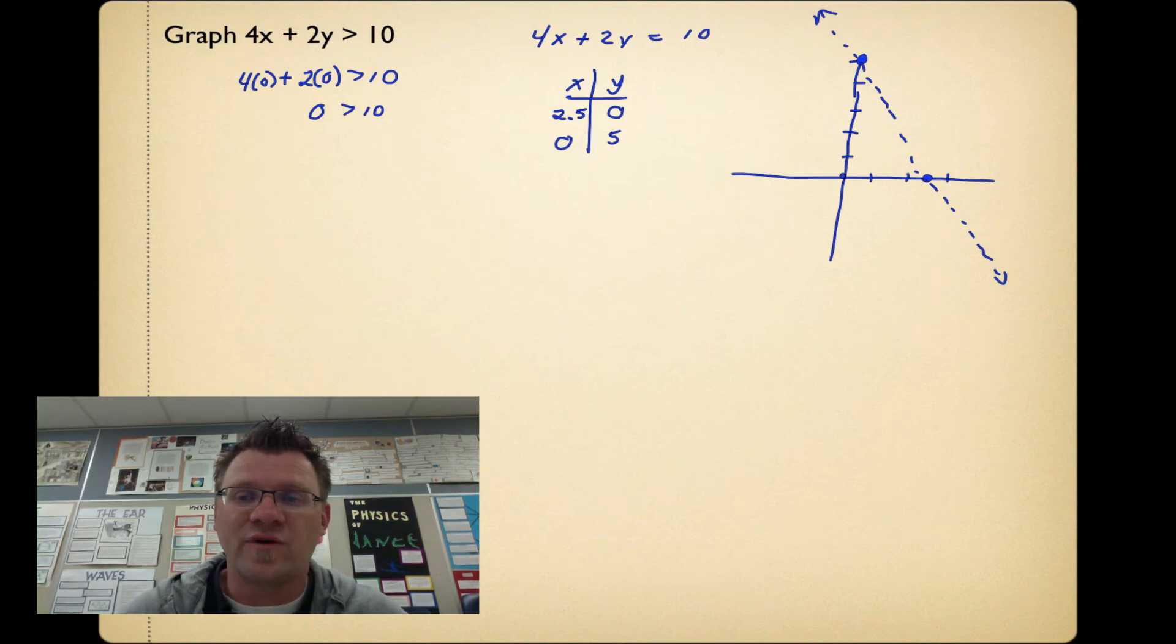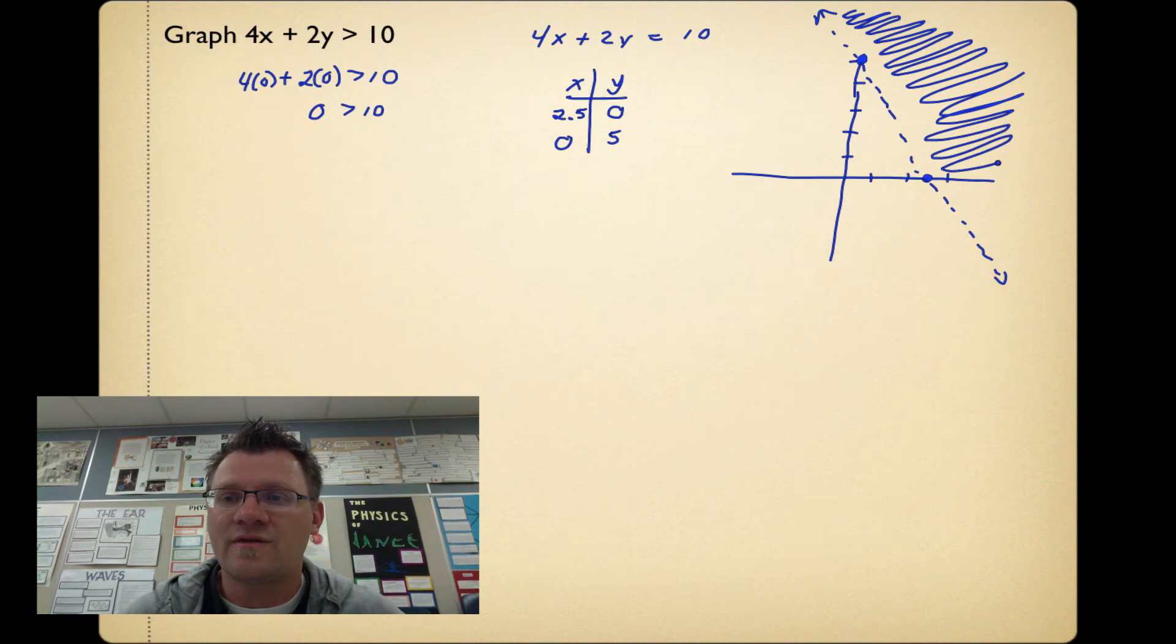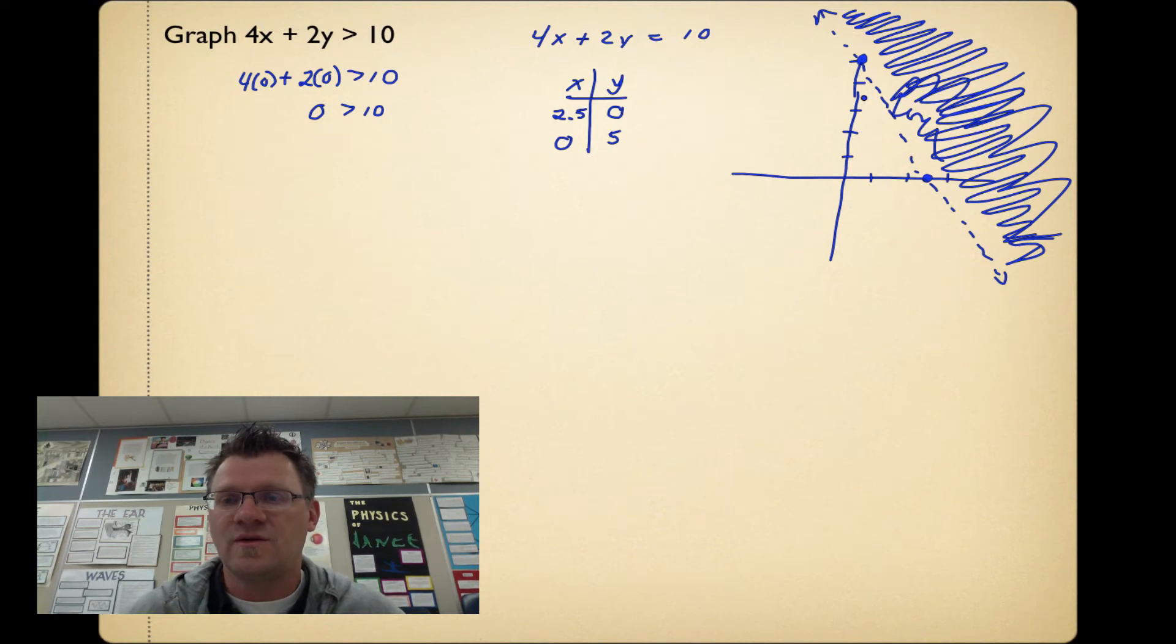0 is not greater than 10, which means that we're not going to shade towards 0, 0. Because if this point 0, 0 is not part of the solution, then any point on this side of the line is not going to be part of the solution. So that means your answer is going to be everything on this side of the line. Any point that you put in that lies in this region, on the right-hand side of that oblique line, will give you an answer that is greater than 10 if you were to plug in x and y.